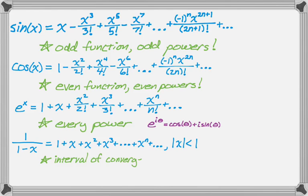And the interval of convergence there is pretty important. So, for example, it doesn't make any sense to plug 5 into this because 1 over 1 minus 5 does not equal the sum of the powers of 5. Just never going to happen.